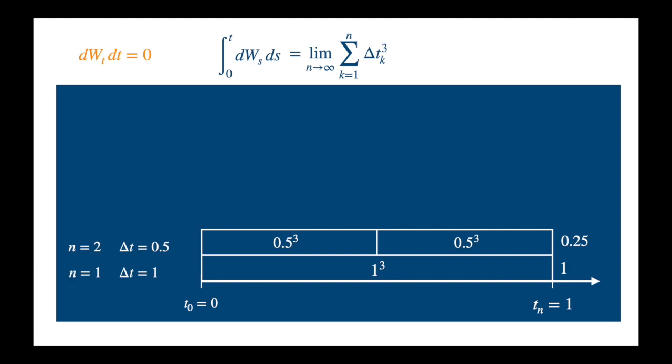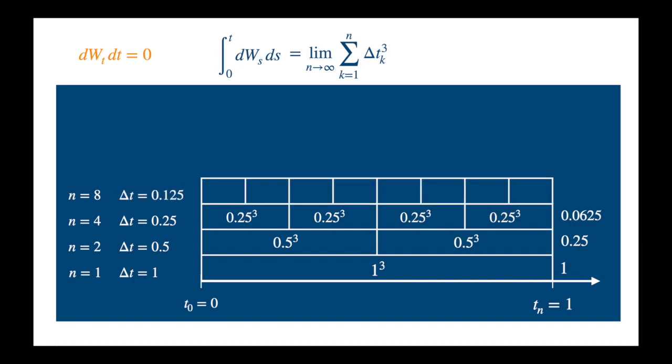Now let's double n again to 4. So 4 sub-intervals, each of length 0.25. And if we calculate the cube of delta t in each sub-interval and sum across intervals, we see it has declined again. And now if we double the number of sub-intervals to 8, so each sub-interval is now of length 0.125. And if we calculate the cube of delta t and sum it, we see the sum has declined. If we continue increasing n, we will see the sum of delta t to the power 3 will go to 0.